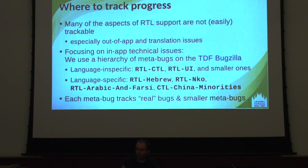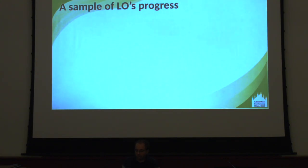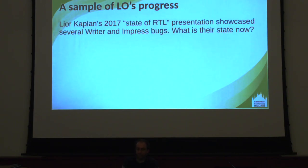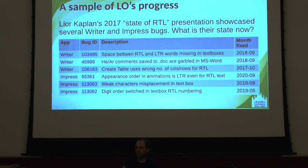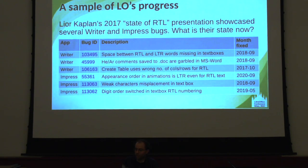Just to give you a sample: in the 2017 State of Right-to-Left support talk given by Leo Kaplan — who I also want to thank for help with this presentation — he listed six typical bugs, three in Writer and three in Impress, that were bugging not just him. By 2018 a few of them were fixed, and by now they've all been fixed. That doesn't mean all right-to-left bugs have been fixed, but putting things on the table and attracting developer focus does have a positive effect. You can see roughly when each of them was fixed.